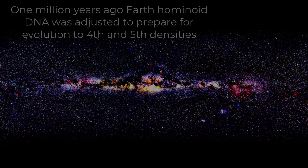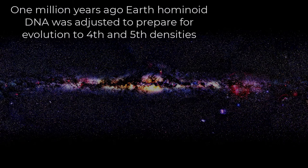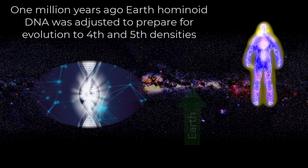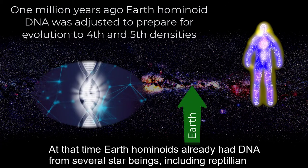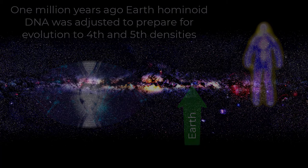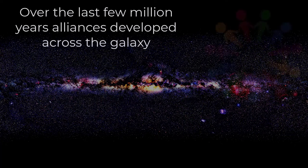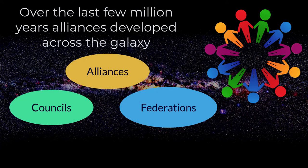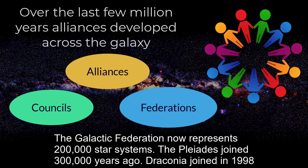A million years ago, Earth hominoid DNA was adjusted to prepare for evolution to fourth and fifth densities. At that time, Earth hominoids already had DNA from several star beings, including reptilian. Over the last few million years, alliances developed across the galaxy. The Galactic Federation now represents 200,000 star systems. The Pleiades joined 300,000 years ago, and Draconia joined in 1998.